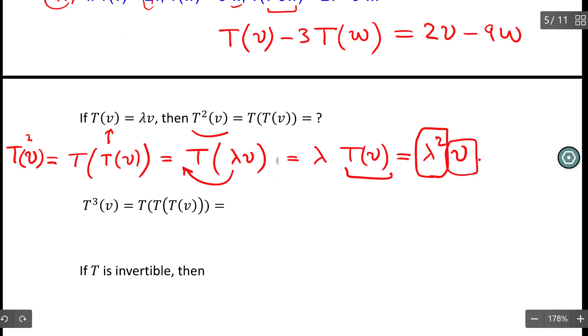We can do the same thing three times, and also get that T³, composition of T with itself three times, has this eigenvalue λ³, and with the same eigenvector. If we do this inductively, we can write Tⁿ(v) equals λⁿv, where n is a natural number.